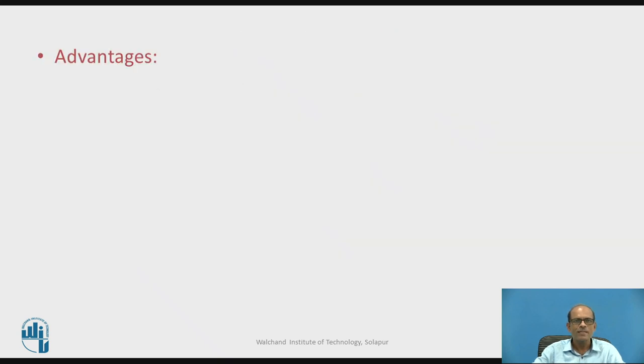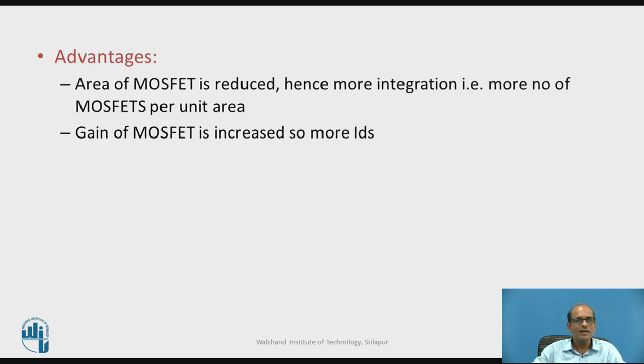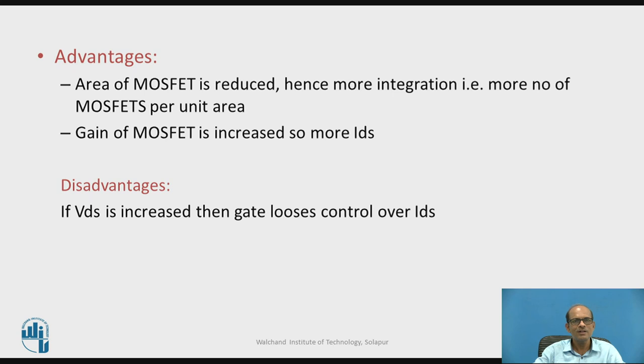The advantages of the short channel effect: the area of MOSFET is reduced, hence more number of MOSFETs are fabricated per unit area, meaning large integration, and gain of MOSFET is increased, so more drain current. The disadvantage is if VDS is increased, then the gate loses control over IDS.